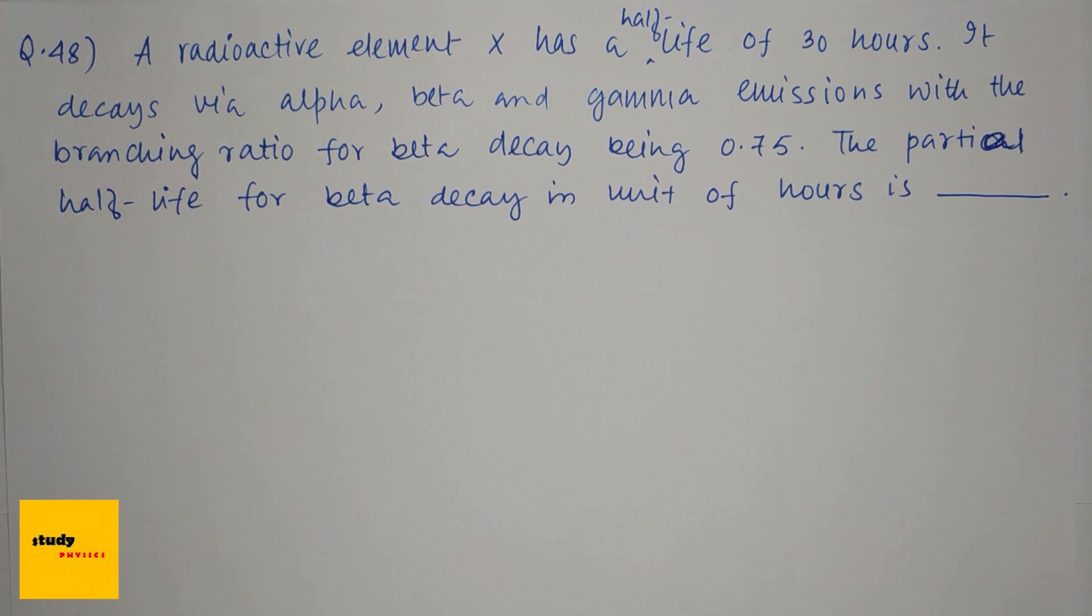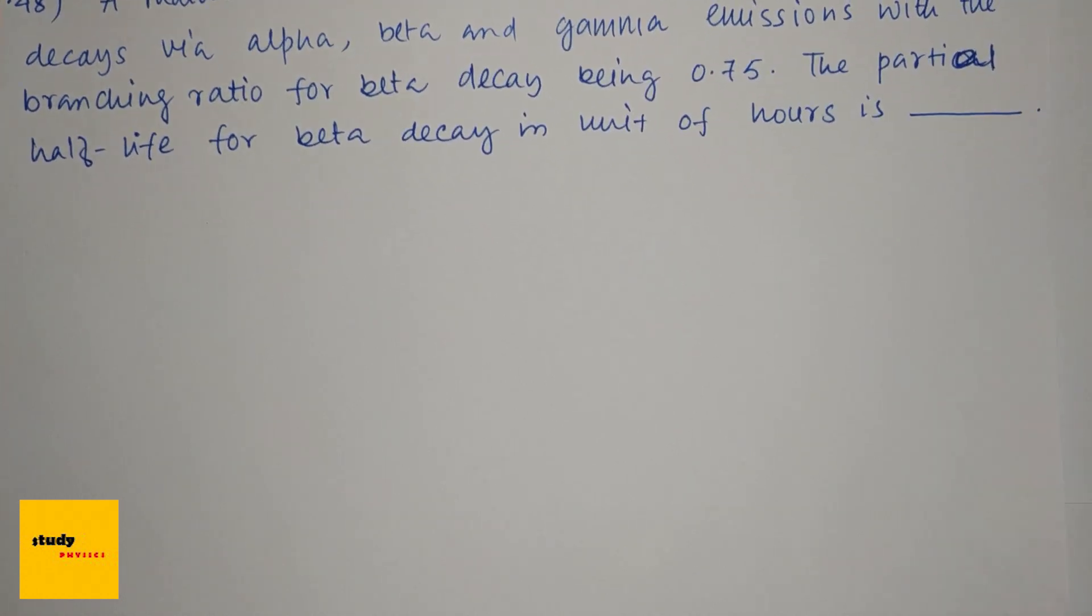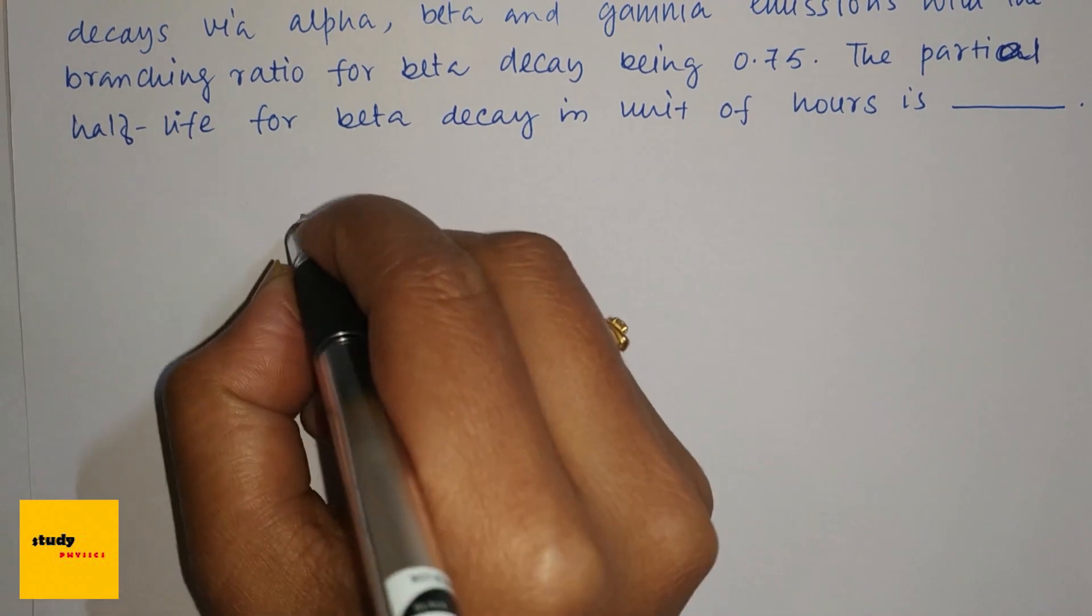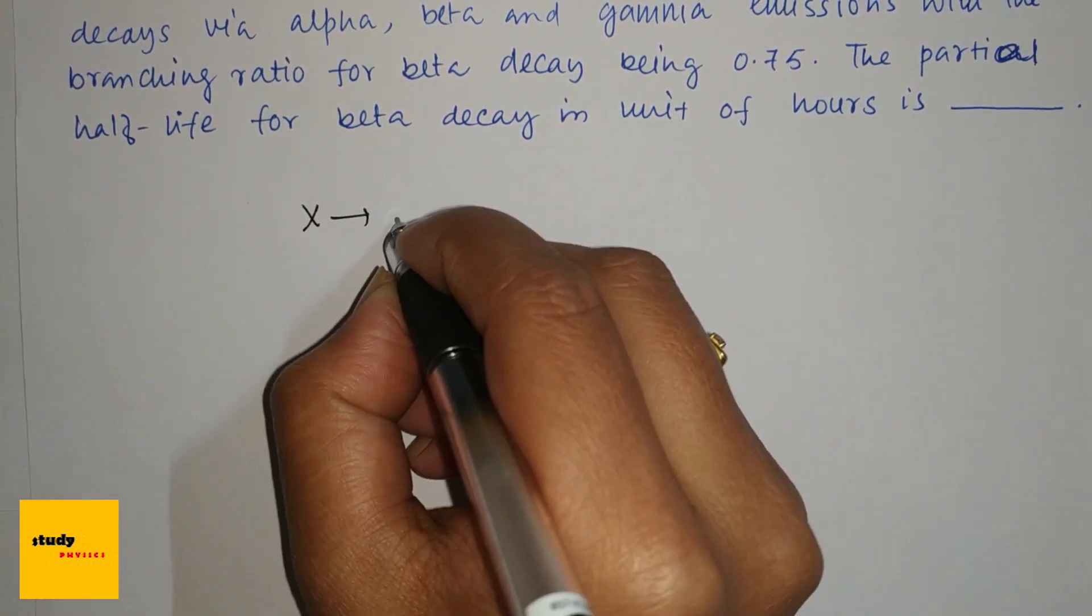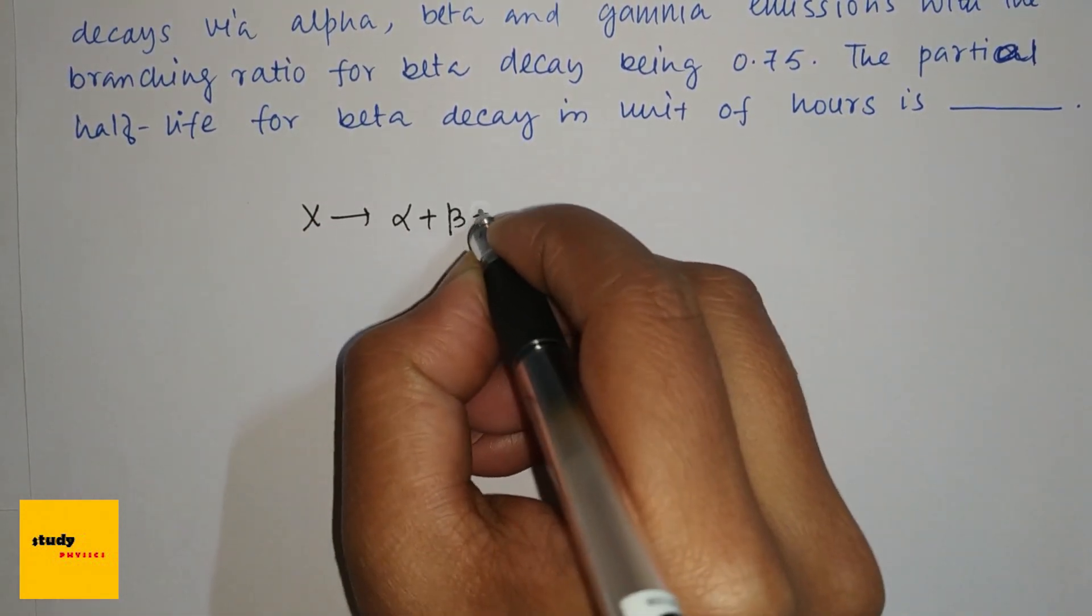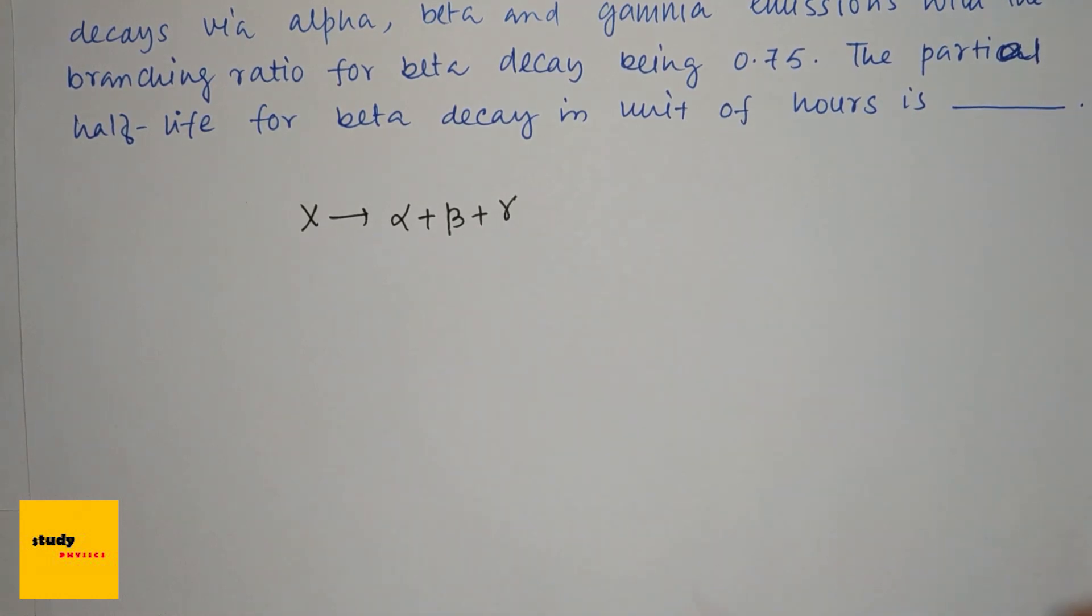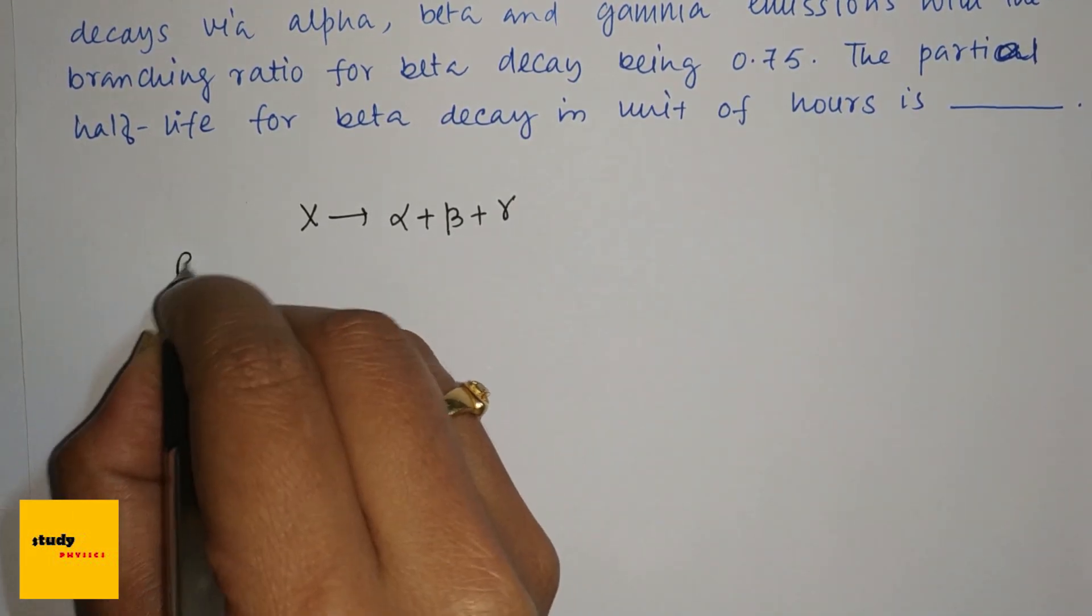The partial half-life for beta decay in units of hours is what we need to find. So the branching ratio is given. Here, X is decaying into alpha plus beta plus gamma emissions.